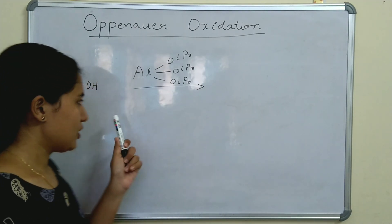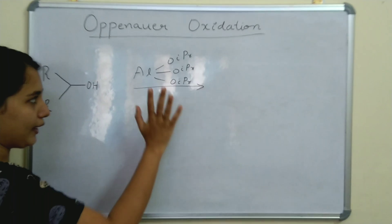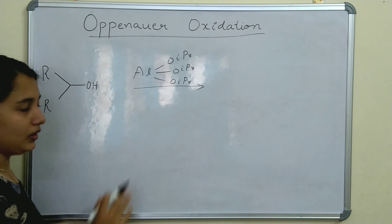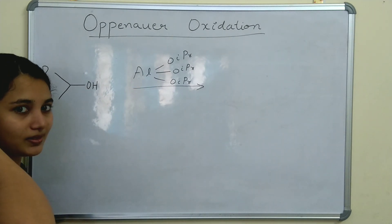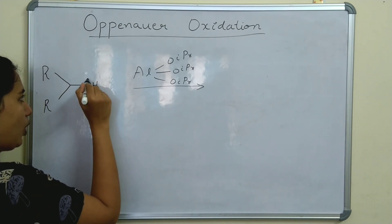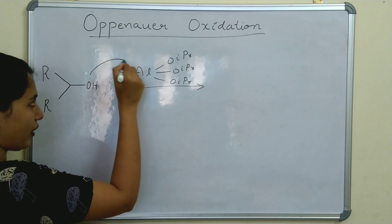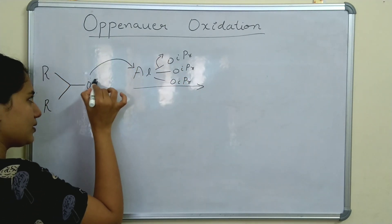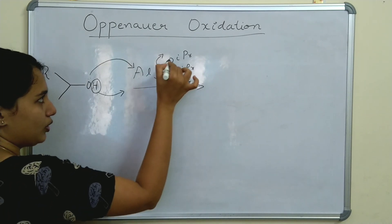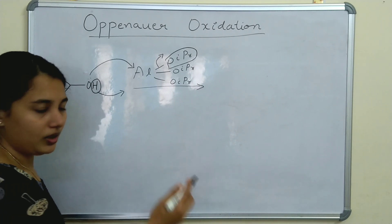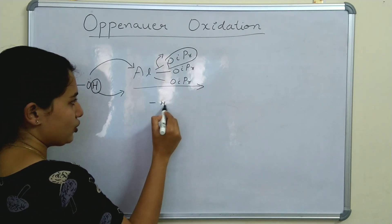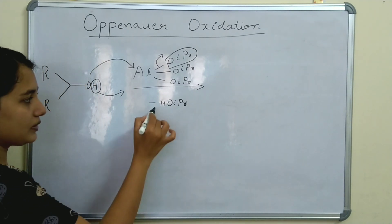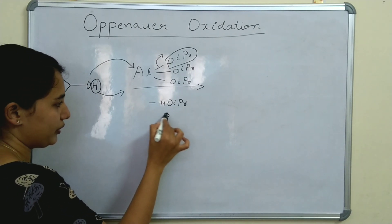Now the mechanism is very simple. First of all, taking a secondary alcohol and aluminium tri-isopropoxide. Aluminium acts as a Lewis acid and abstracts electrons. The oxygen's lone pairs are transferred to aluminium and one of the isopropoxide groups is eliminated. This hydrogen is abstracted by this group and they form an alcohol. So minus H-isopropoxide is eliminated.